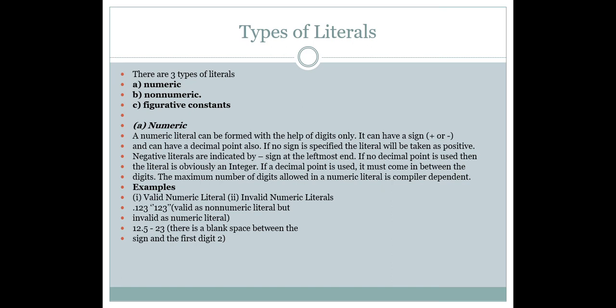Here we have examples of valid and invalid numeric literals. The first example, .123, is a valid numeric literal. The second example, 12.5 (12, decimal point, 5), is also a valid numeric literal. Whereas "123" mentioned within double quotes is not a numeric literal. Also, having a space between the minus sign and the first digit 2 in -23 makes it an invalid numeric literal.